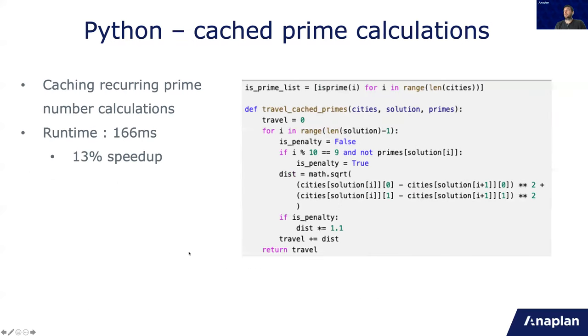So next, we know the prime calculation takes a lot of time. So we can calculate them beforehand. That's what I do here: is_prime list is calculated. Then when I'm using the function, I'm adding another variable. This reduces the runtime to 166 milliseconds, which is a 13% speedup, which is not bad for almost nothing to change.